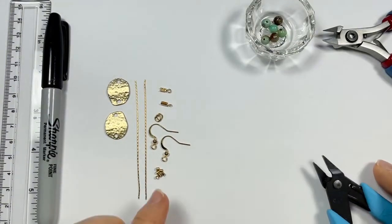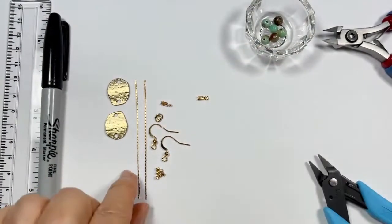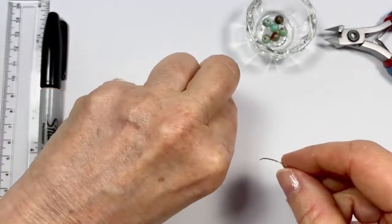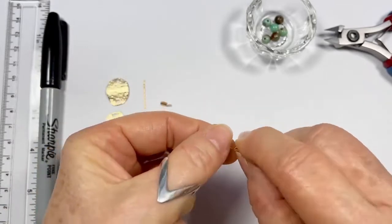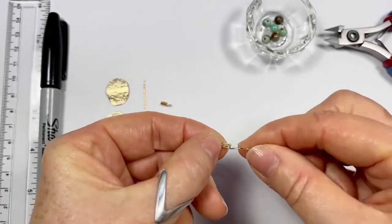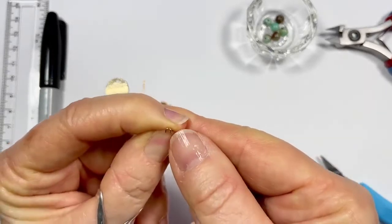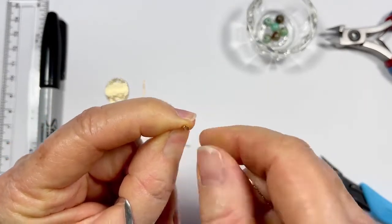The first thing we're going to be doing is attaching these little crimp ends to the beading chain here. I found that the easiest way to do this is to place the beading chain into the foldover crimp. You can see it's a sort of a u-shaped opening here.